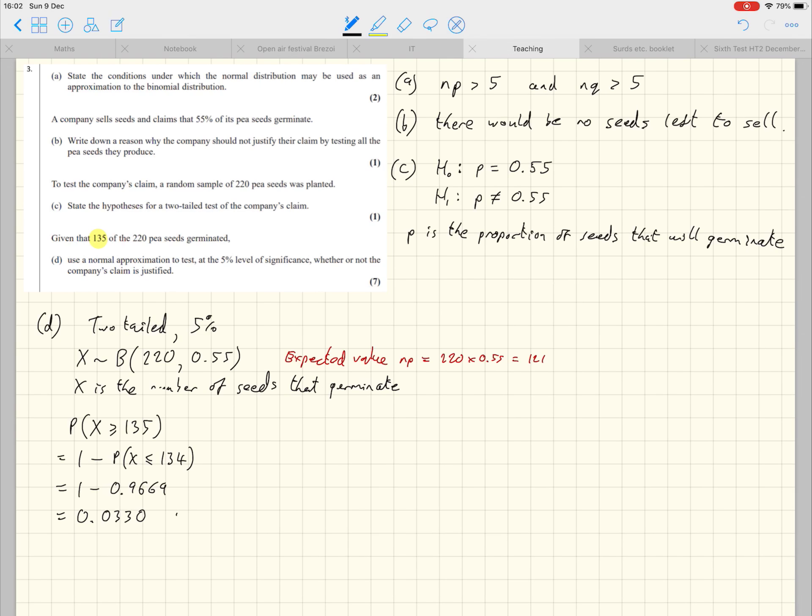Now, note that that is about 3.3%, and that is bigger than 2.5%, which, remember, because we're two-tailed and it's 5%, we have 2.5% at either end. So this probability of that experimental result, or something at least as extreme as that experimental result, is 3.5%, which is not unlikely enough to reject H0.